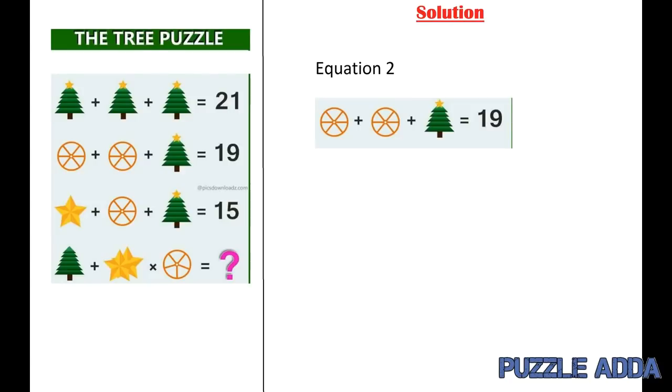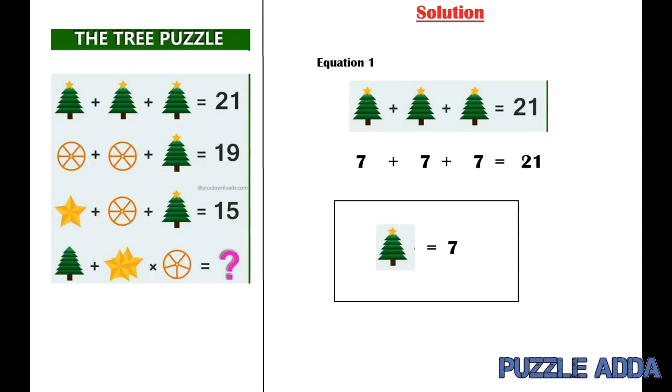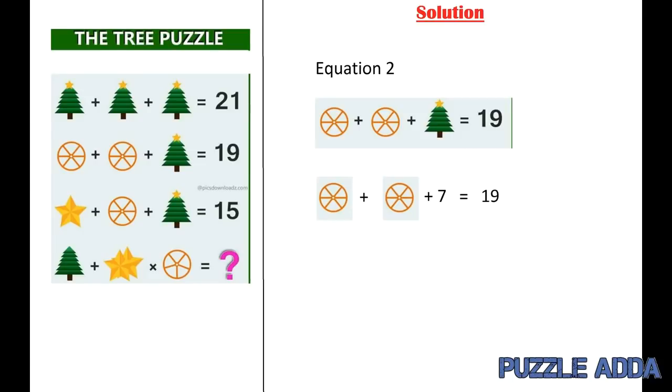Now in the second equation we have a circle inside it there is 6 lines plus a circle inside its 6 lines plus a tree with star which is equal to 19. So taking the value of a tree with star from equation 1 which is 7, a circle inside its 6 lines is equal to 6.